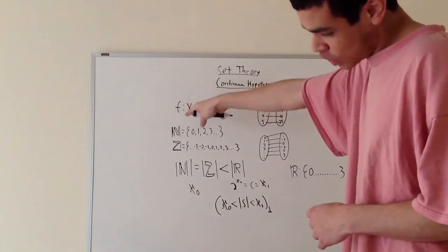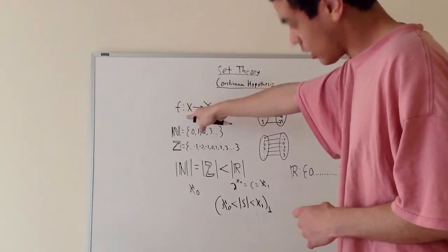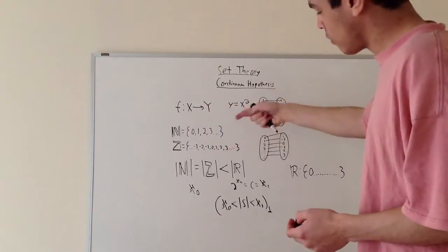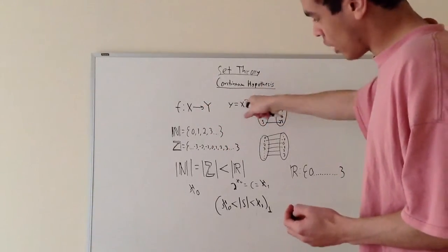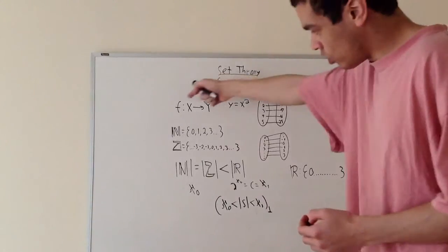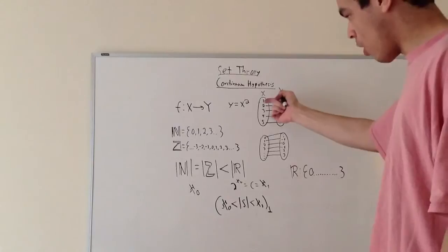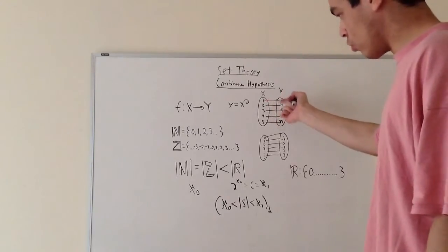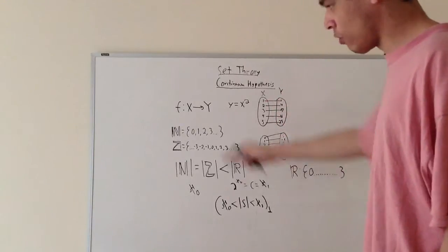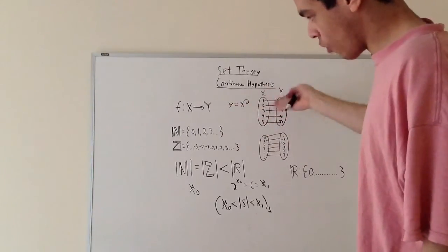This notation means that a function f takes x and maps it to y. Think of it like y equals x squared — this is your x, this is your y, this is your domain, that's your range. So 1 squared is 1, 2 squared is 4, and so on. The function maps x to y, and that's really what this notation is.